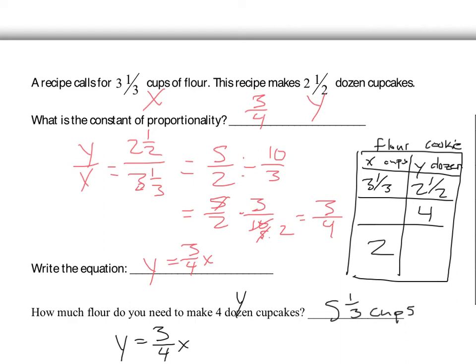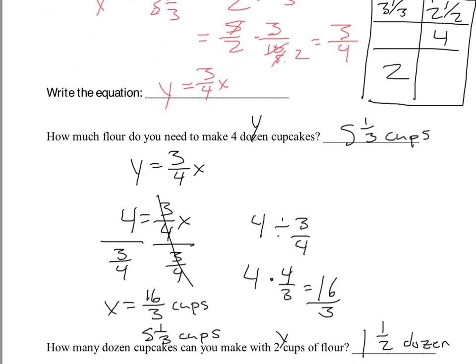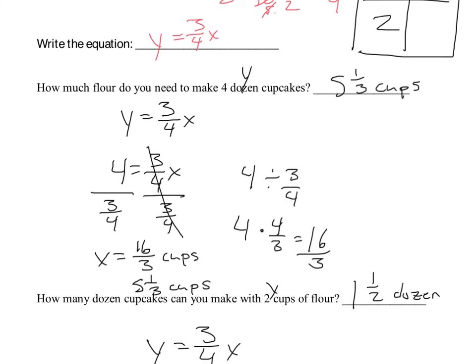Looking at the first question — how much flour is needed to make four dozen cupcakes — Y represents dozens of cupcakes, so I plug four in for Y. Dividing both sides by three-fourths and doing the arithmetic gives X equals sixteen-thirds cups of flour.